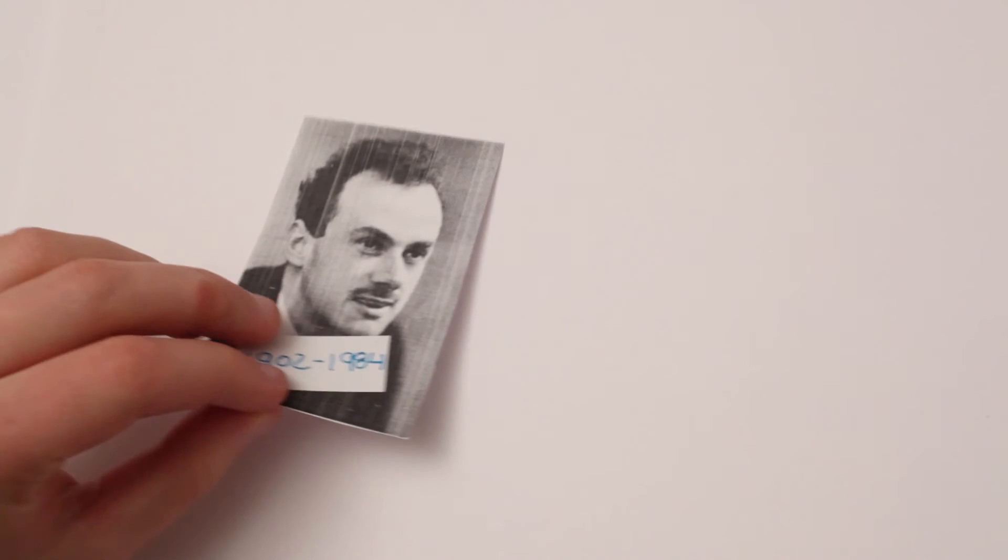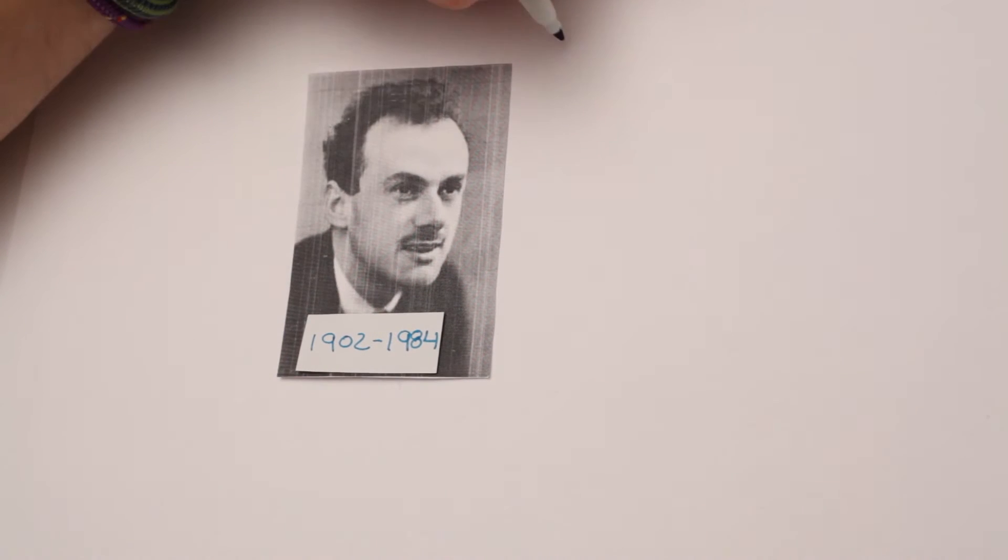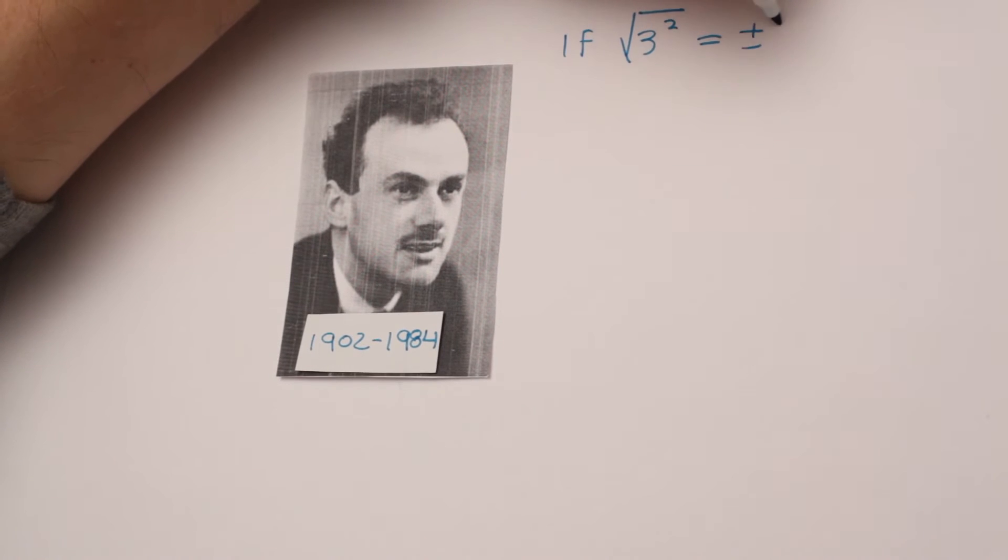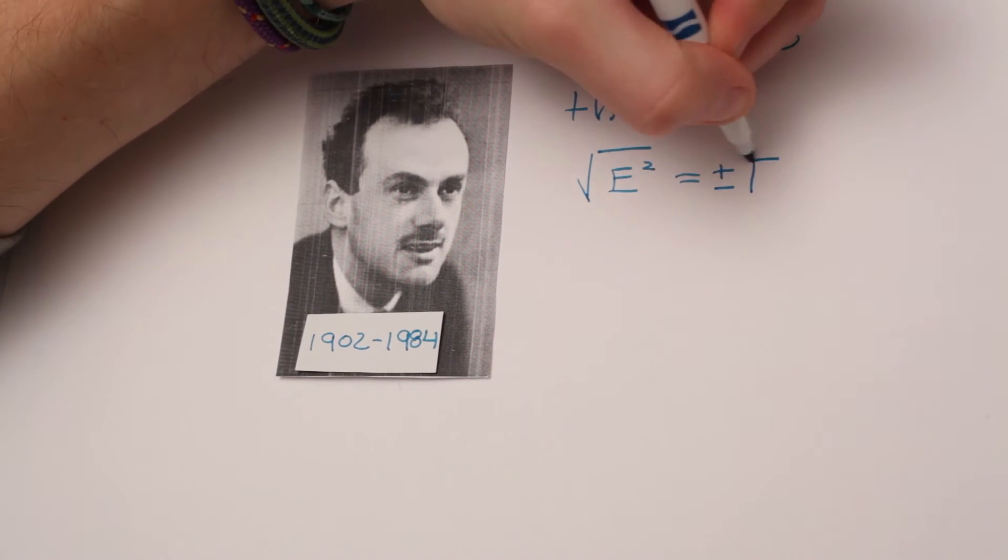Physicist Paul Dirac saw E squared and suggested that the negative roots were antimatter. Mathematically, this makes sense because when you take the square root of something, there are positive and negative roots. At the time though, the idea was waved off, but he was very right, and his idea is at the heart of something called a PET scan.